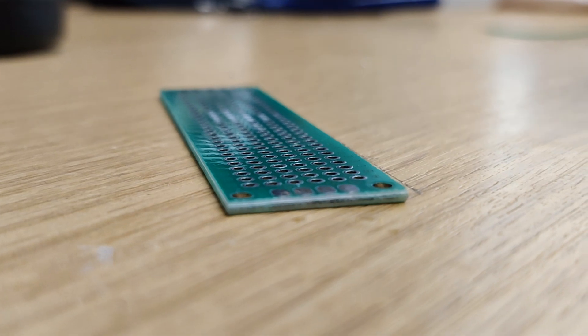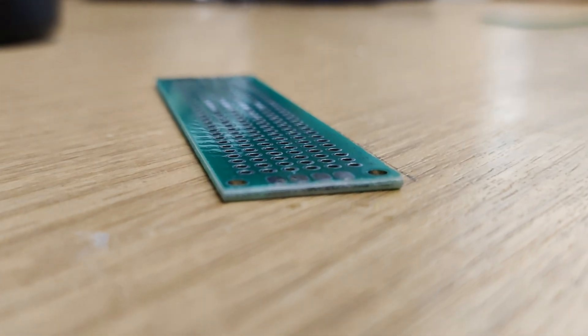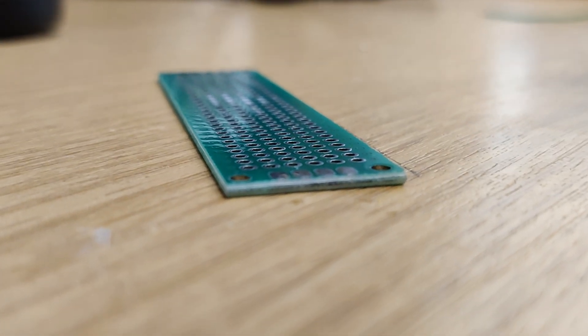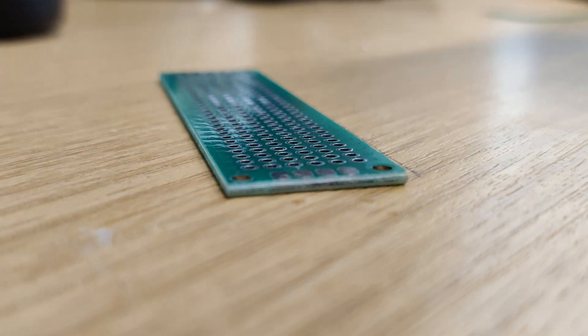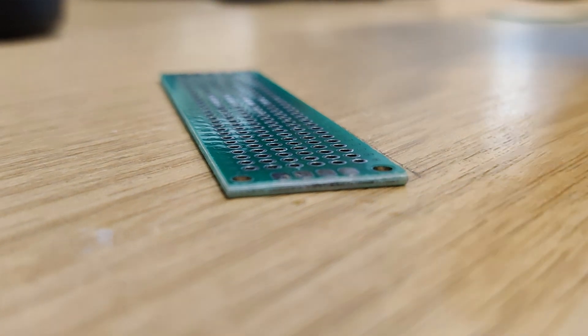The normal method of soldering would be to tin the circuit board pad, then heat the pad and the wire together at the same time and lastly apply the solder. My technique is different. Just watch this.